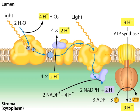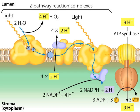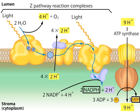Oxygenic photosynthesis, also called the Z-pathway, is the only biochemical reaction known to produce molecular oxygen. The other products of this pathway, NADPH and ATP, represent the conversion of light energy into chemical energy. NADPH and ATP provide the energy to fix carbon dioxide into biomass.